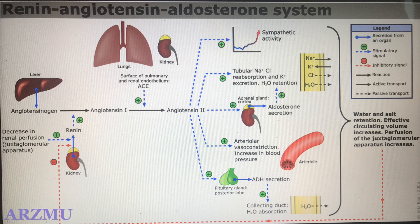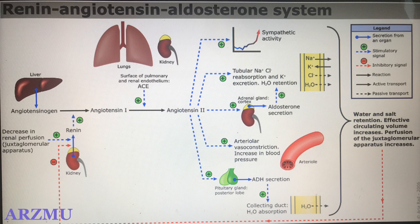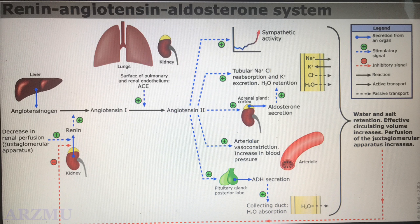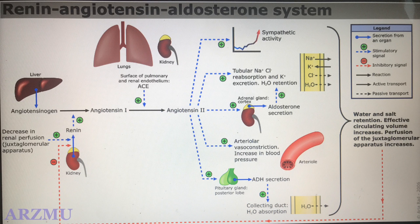Now let's have a view on the formation of angiotensin 2 in the human body, which is formed in a system called the renin-angiotensin-aldosterone system (RAAS). The RAAS is a hormone system within the body that is essential for the regulation of blood pressure and fluid balance.